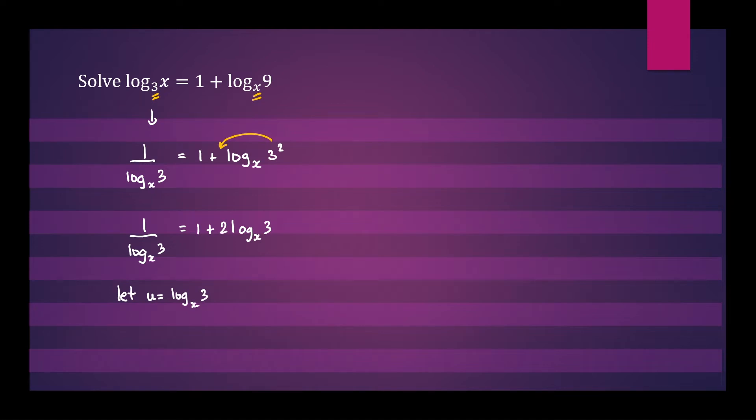Now we substitute u into the equation. We'll have 1 on u equals 1 plus 2u. Multiply this equation by u. So that will give us the equation 1 equals u plus 2u squared.